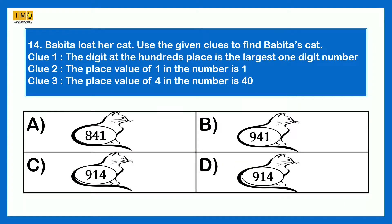Babita loses a cat. Use the given clues to find Babita's cat. Clue 1: the digit at the 100s place is the largest 1-digit number, which is 9. Clue 2: the place value of 1 in the number is 1, so 1 is at the ones place. Clue 3: the place value of 4 in the number is 40, so 4 is at the tens place. Therefore the number is 941 and the answer is Option B.